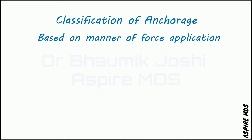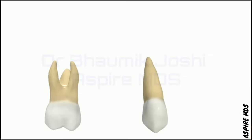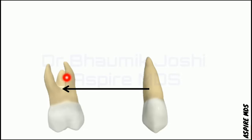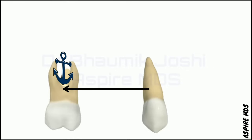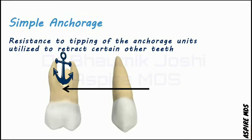Anchorage can be classified based on the manner of force application into simple, stationary, and reciprocal anchorage. Consider an example with a molar and a canine — you want to retract the canine using the molar as anchorage. In this case, using the molar as anchorage will also cause a tipping movement on the molar. The kind of anchorage that resists the tipping moment of the anchorage unit while achieving the required tooth movement is known as simple anchorage.